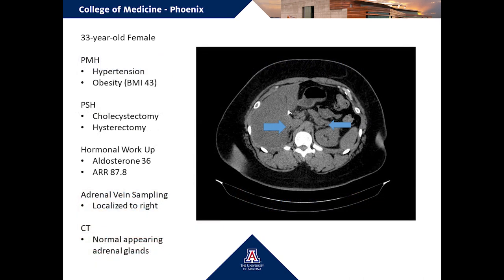This is a 33-year-old obese female with an elevated serum aldosterone and aldosterone-to-renin ratio consistent with primary hyperaldosteronism. A preoperative adrenal vein sampling localized the increased aldosterone production to the right adrenal gland. She was therefore recommended to undergo a right adrenalectomy.